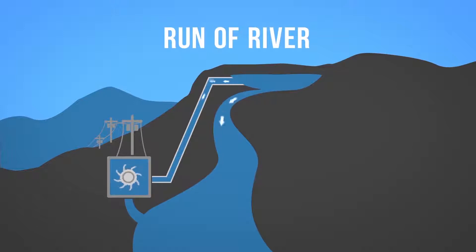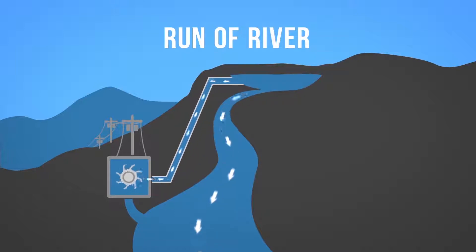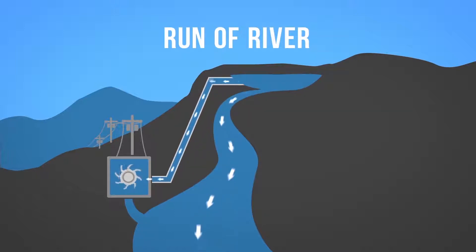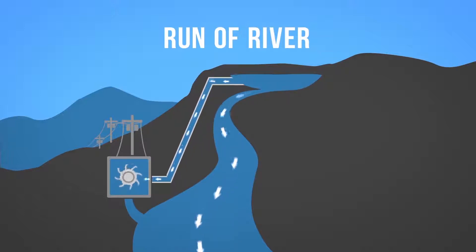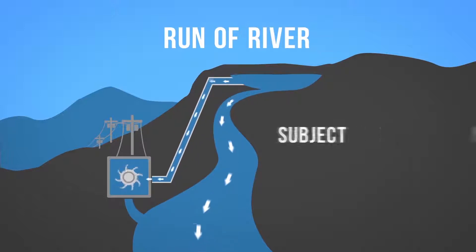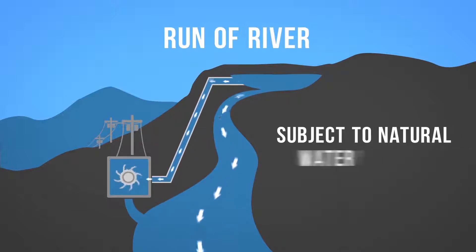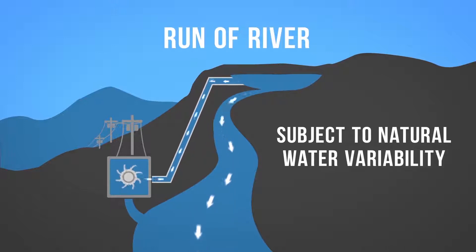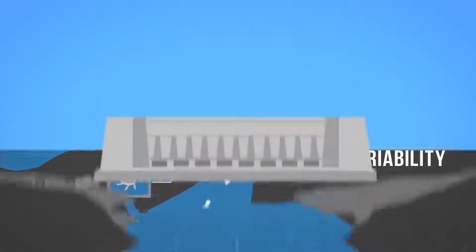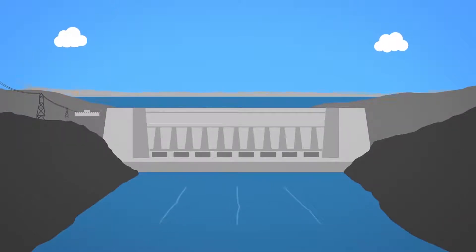The second form of hydroelectricity production is run-of-river hydro. Run-of-river still uses turbines and generators, but relies on natural water flow rates of rivers, diverting just a portion of the water through turbines. Because run-of-river hydro is subject to natural water variability, it is more intermittent than dammed hydro.